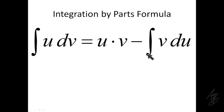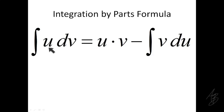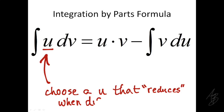The idea is we want to take an integral that we cannot integrate and rewrite it as an integral that we can. Going from u to du tells us that we're going to differentiate u. We want to choose a u that reduces when we take the derivative — for example, an exponent that decreases in power, or a term that differentiates to a constant and disappears.